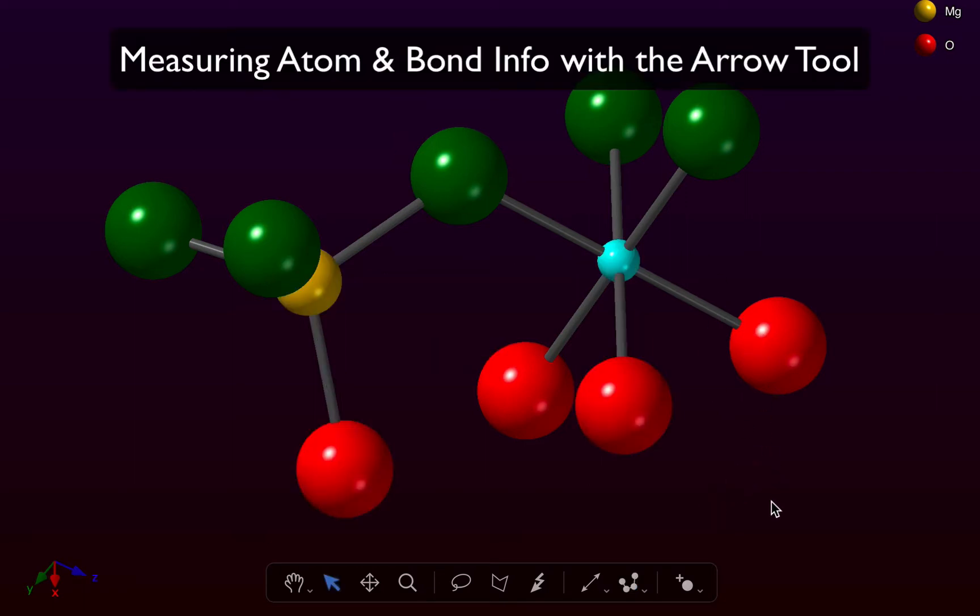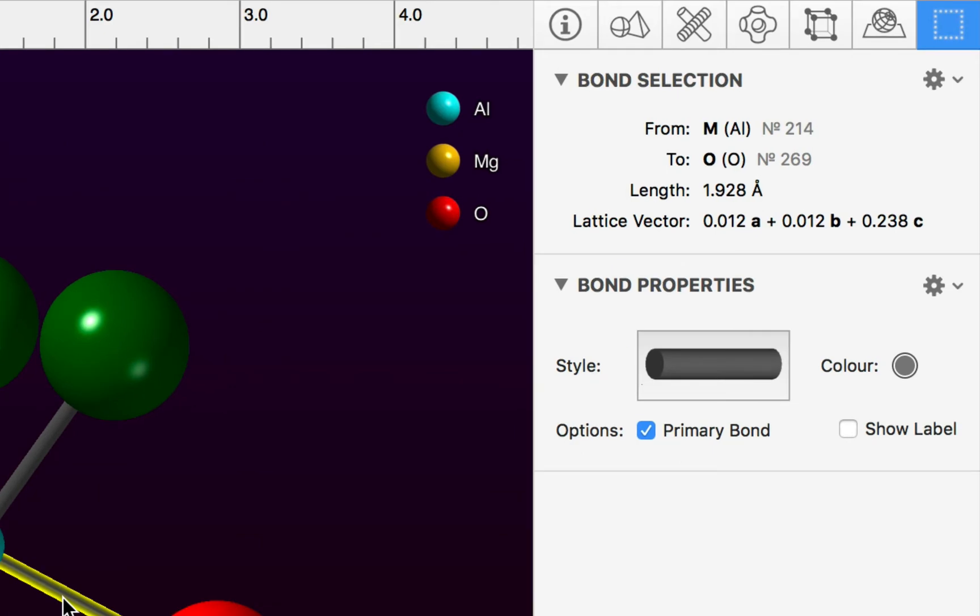We can do other measurements in CrystalMaker. If you move the arrow tool over a bond, the bond distance is highlighted. If you select that bond by clicking on it with the arrow tool, then information about that bond is displayed in the selection inspector on the right-hand side of the screen. And here we have a summary of the selected bond, its length and its lattice vector.